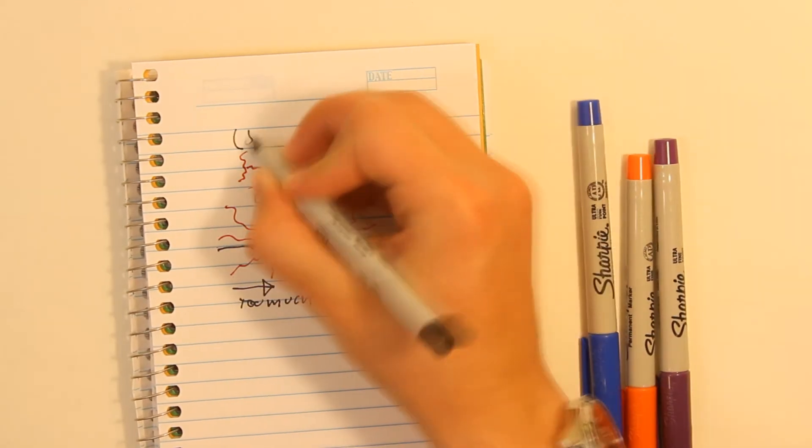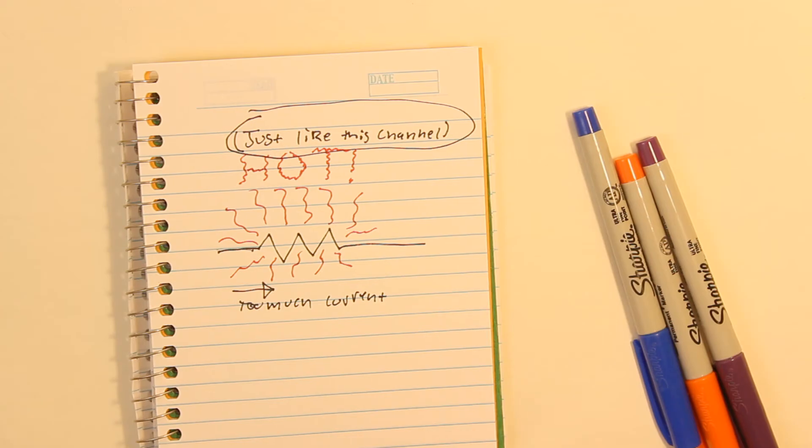Now that I have that out of the way, there is one more important concept. There are two types of current flow, which are called AC and DC, like the band.